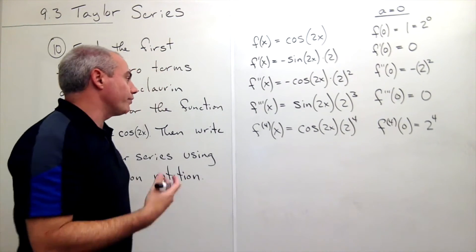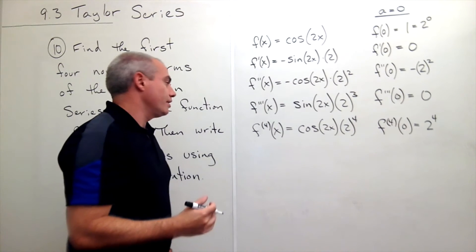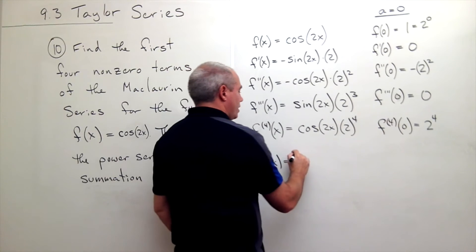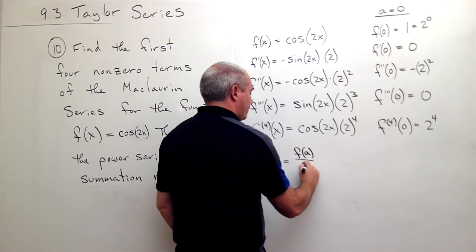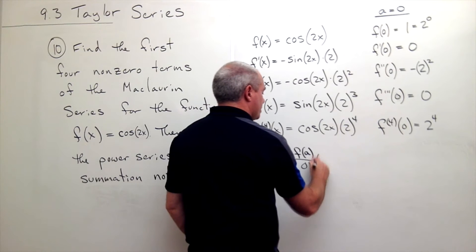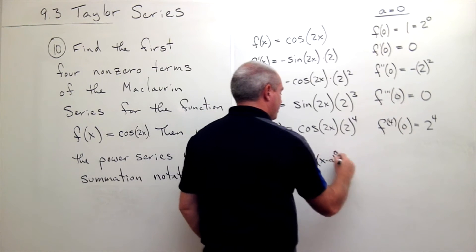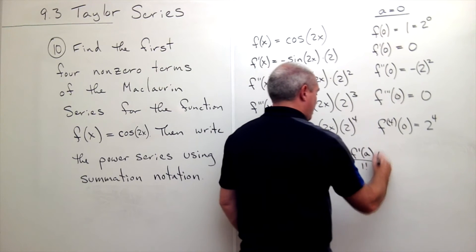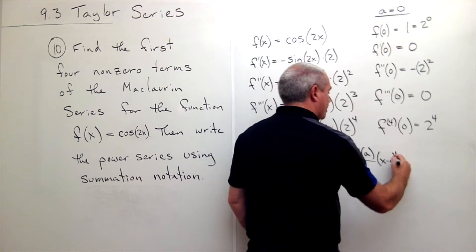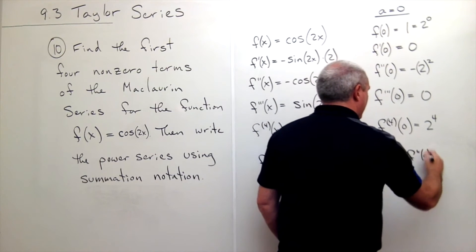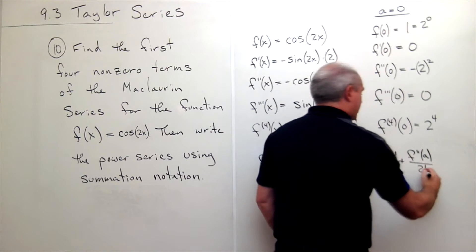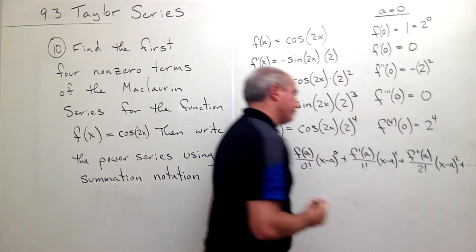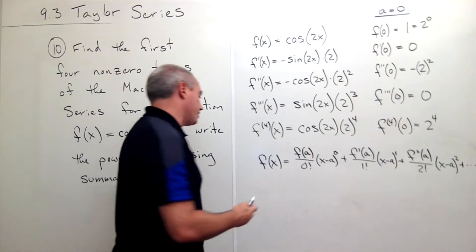Now let's remember how we write down a Taylor series. A Taylor series looks like this: f of x equals f at a over zero factorial times x minus a to the zeroth, plus f prime of a over one factorial times x minus a to the first, plus f double prime of a over two factorial times x minus a squared, and so on.